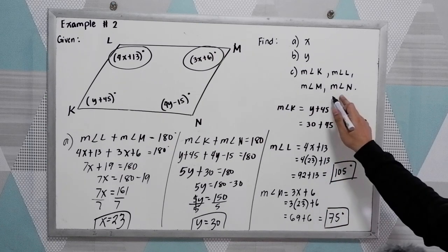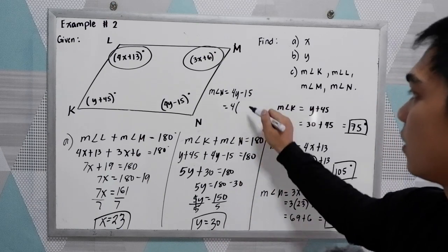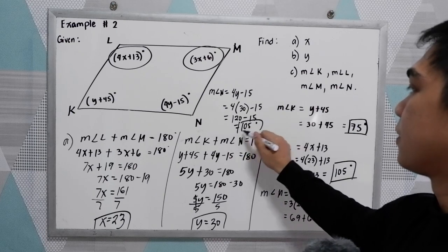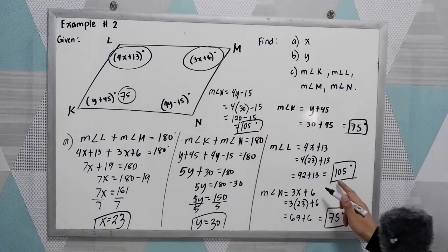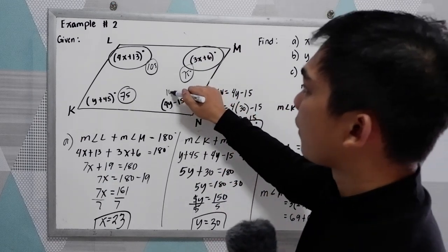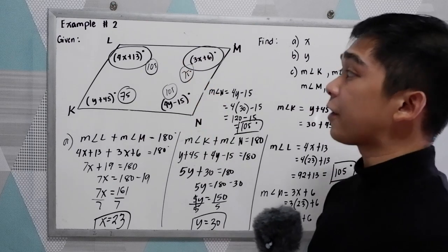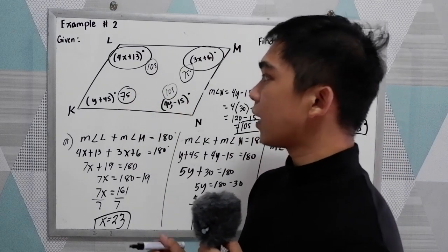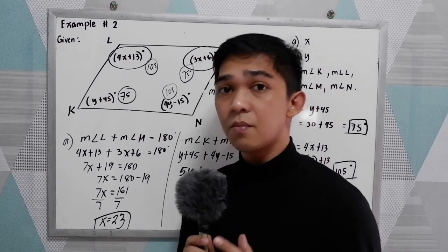Measure of angle N equals 4Y minus 15, so 4 times 30 minus 15 equals 120 minus 15 equals 105 degrees. So the angles are: K equals 75°, L equals 105°, M equals 75°, and N equals 105°. To verify: consecutive angles 105 plus 75 equal 180, and 75 plus 105 equal 180. We can also confirm property number 2 — opposite angles are equal: 75 equals 75, and 105 equals 105. That is property number 3: consecutive angles of a parallelogram are supplementary.